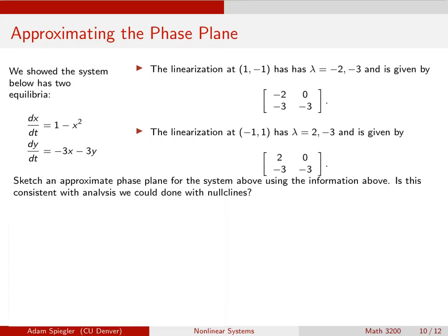And keep in mind that we can find this by finding the Jacobian, which is this matrix of partial derivatives, and then evaluating those partial derivatives at the equilibrium.